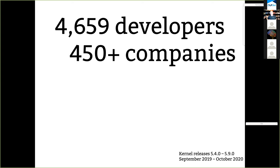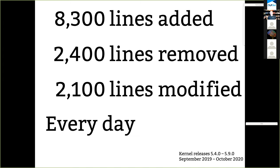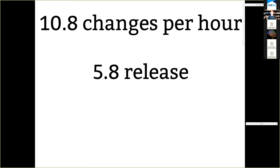Nobody works for anybody else — we all contribute to make things better for ourselves, and it works out for everybody. Our rate of change looks not that bad until you look at the units: this is what happens every day, 24 hours a day, seven days a week. Averaged over the whole release cycle, we're going very very fast. We keep going a little bit faster — currently almost 11 changes per hour as of the 5.8 release.